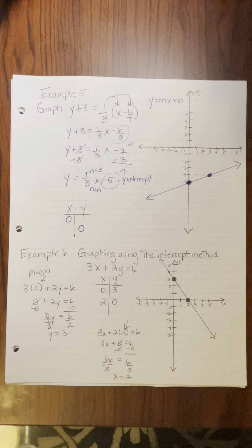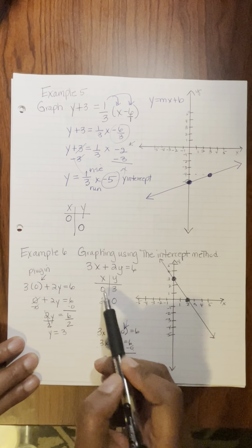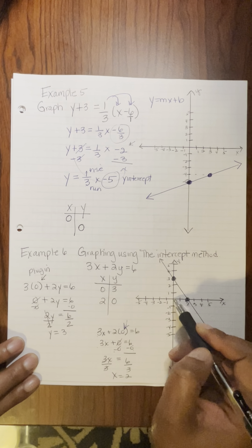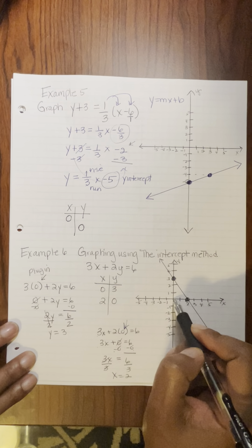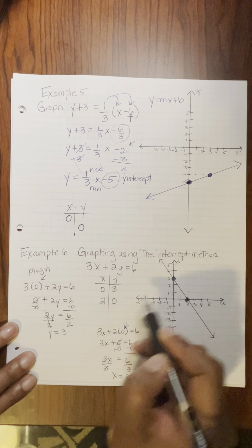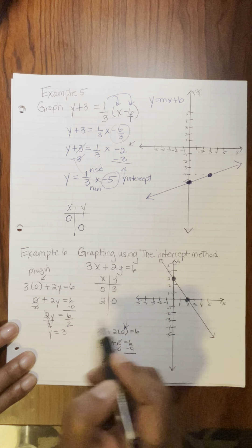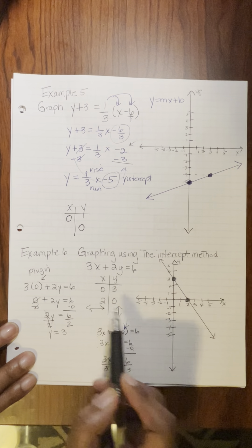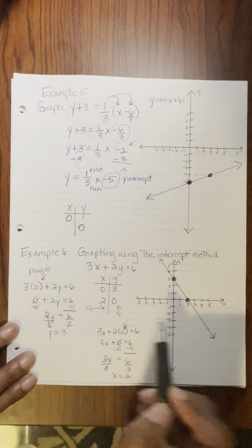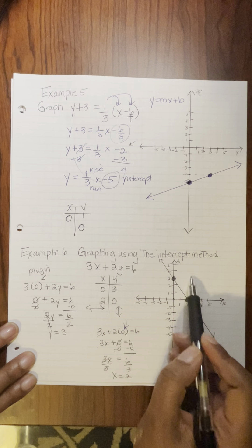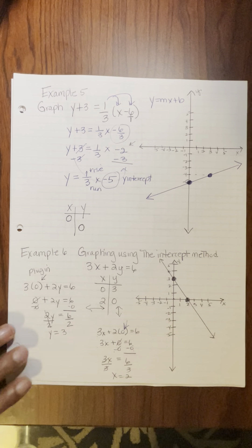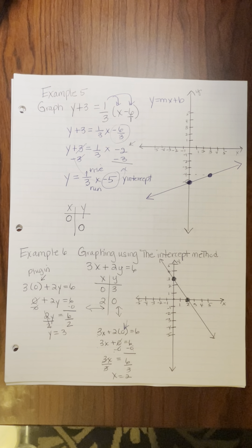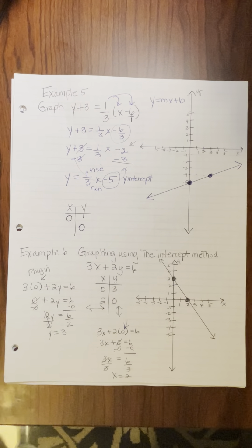Now you come over here and just graph your 2 points. Point (0, 3): 0 means the elevator doesn't slide, it goes up 1, 2, 3. Point (2, 0): the first number tells me to slide and the second number tells you whether to go up or down. So I slide over 2 but don't go up or down. These are your 2 points — you have your intercept form, and you have y equals mx plus b, which is slope-intercept form, or you can use your table.